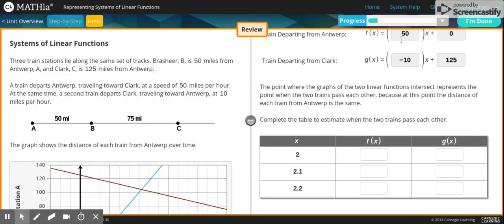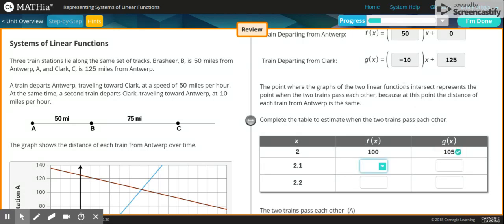So for the f of x, you have to take 50 times 2, which is 100 plus 0. So that means it's 100. Then you take negative 10 times 2, which is negative 20. And so it's 105 by the looks of it. Because that's negative 20 plus 125 would equal 105.